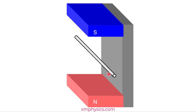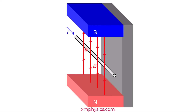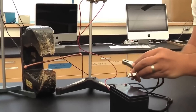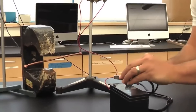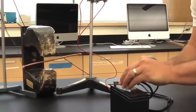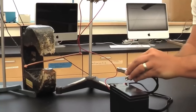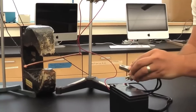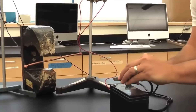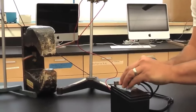We have a conductor sitting in a magnetic field. If we pass a current through the conductor, the conductor will experience a magnetic force. You can see it happening in this demonstration here. When the current is passed through the rod, you can see the rod being kicked towards the left. That's due to the magnetic force it's experiencing.